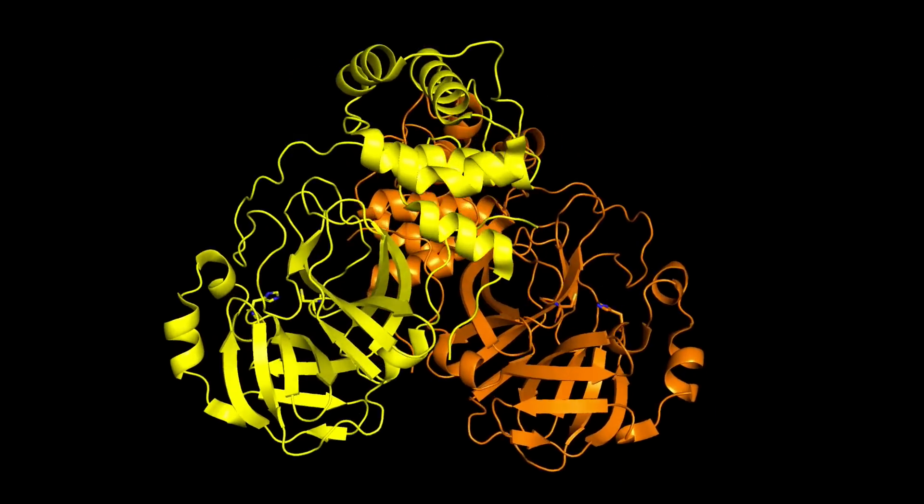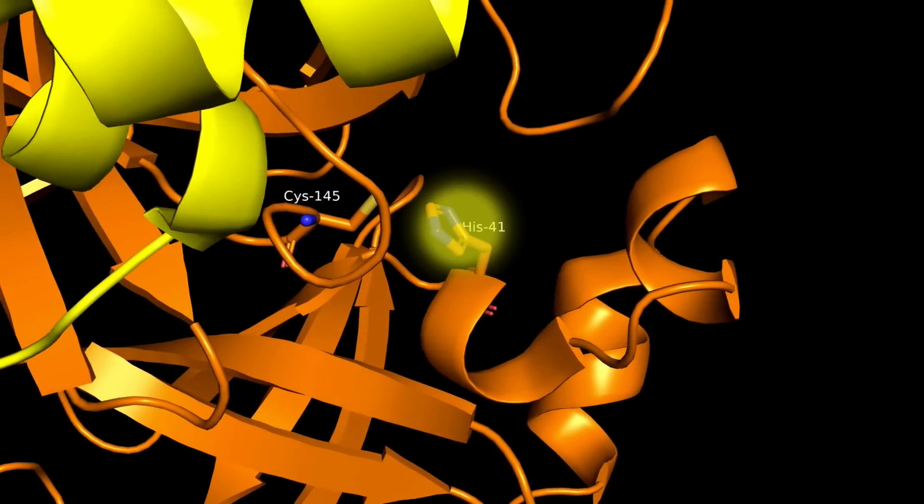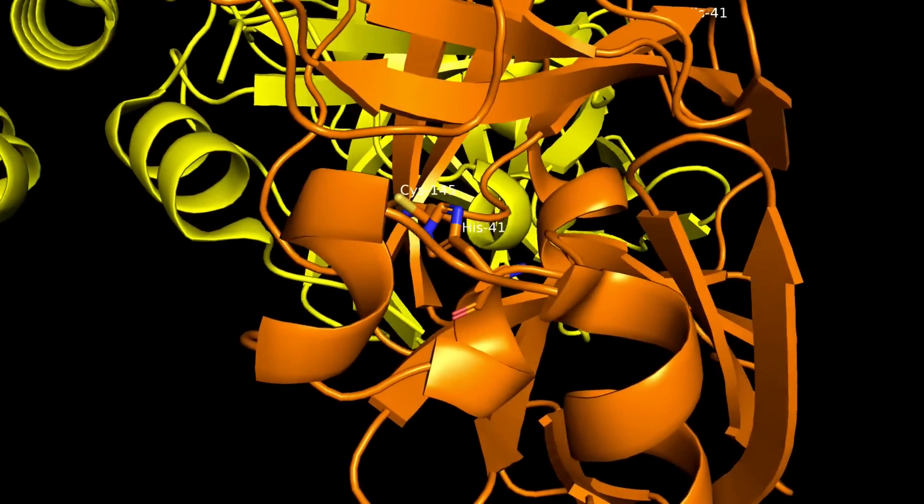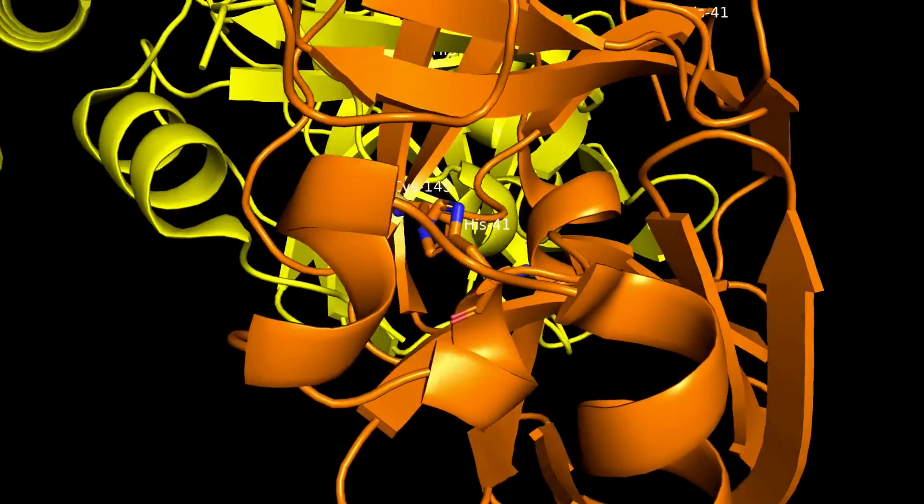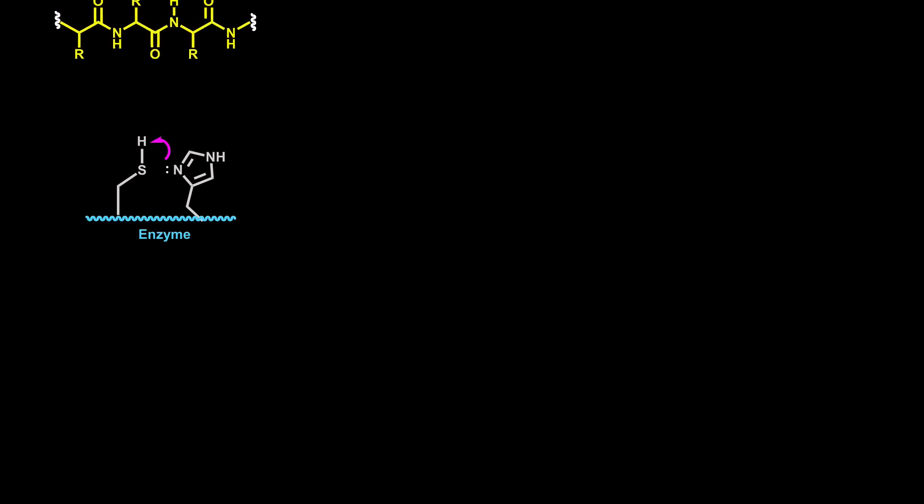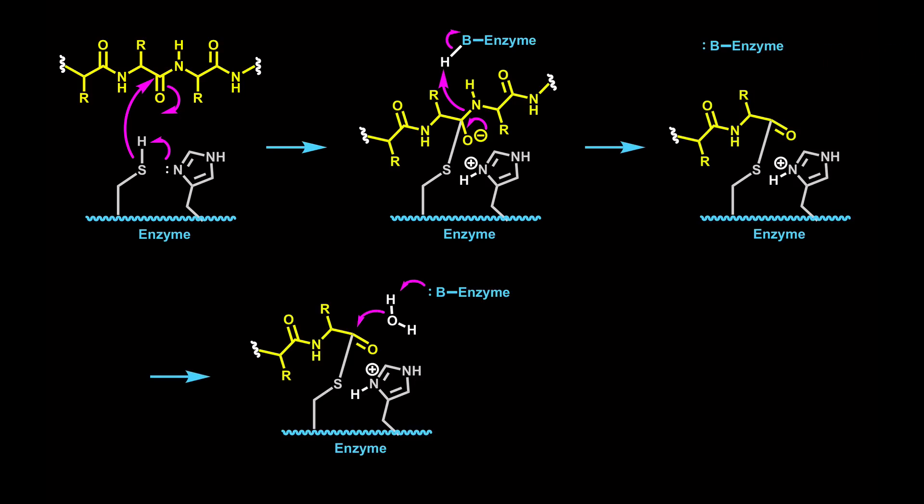Moving over to the active site, the important residues are this cysteine side chain and this histidine. This enzyme is a cysteine protease, so it uses the nucleophilic cysteine to attack the amide bond of a peptide. In the mechanism, the histidine nitrogen grabs the proton off cysteine's side chain, allowing it to attack the peptide bond. The peptide bond is cleaved, and then a water molecule can come in, releasing cysteine so that the protease can cleave another polypeptide chain.